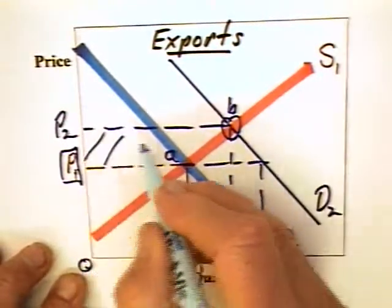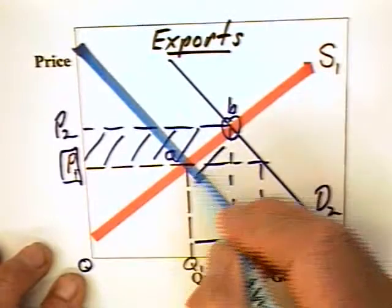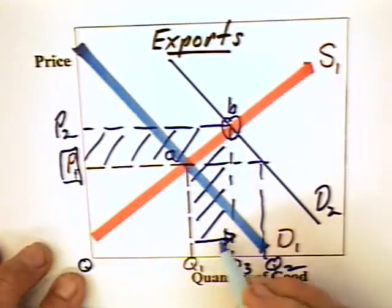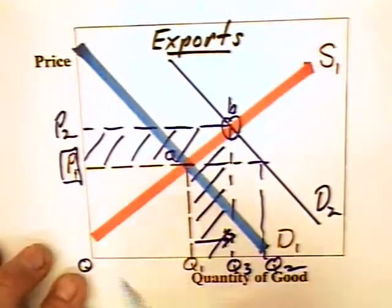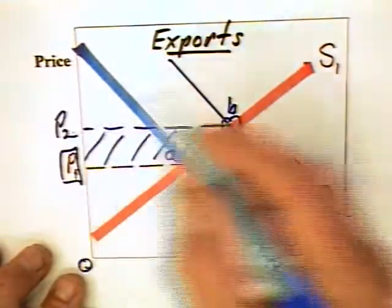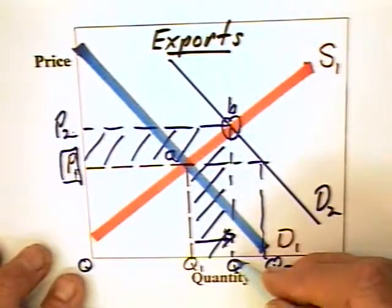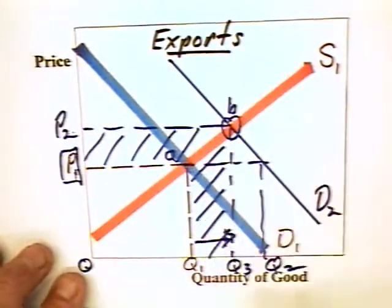The increase in revenue to domestic producers from the advent of exports is equal to that L-shaped area, P1, P2, B, Q3, Q1, A.